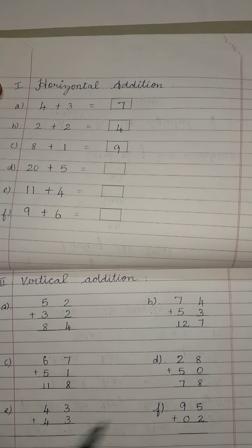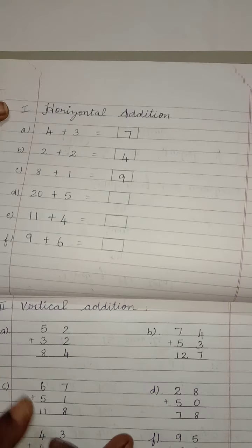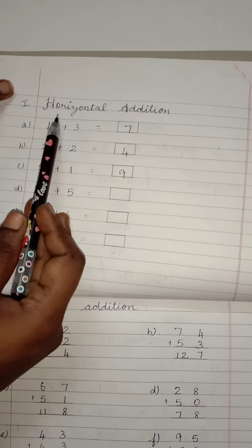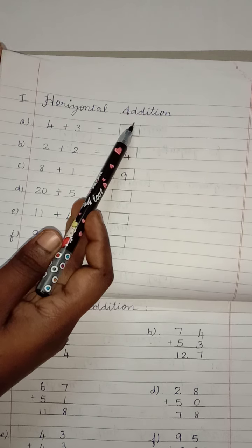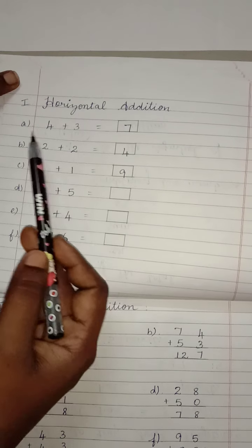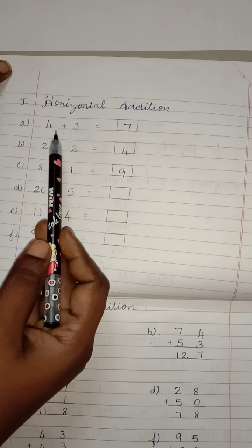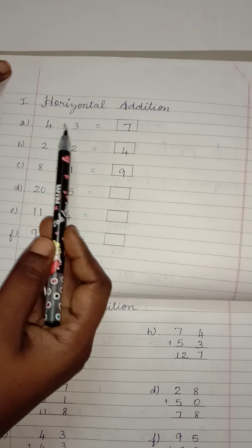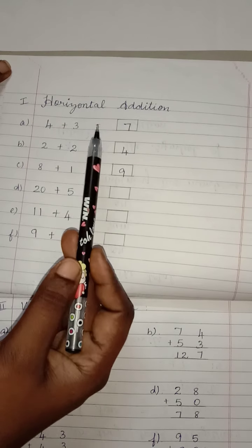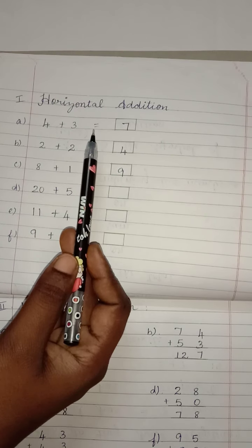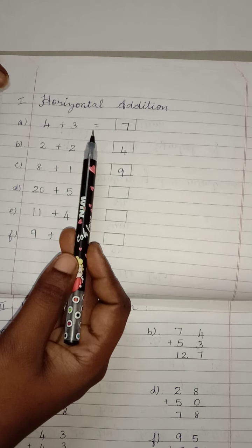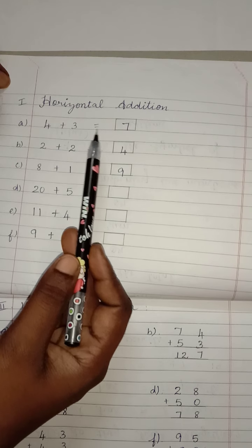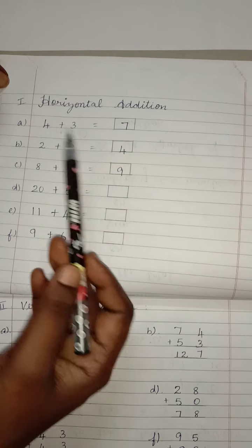Then, check the next page. First, Horizontal Addition. For the first sum: 4 plus 3 — what is the answer? 4 plus 3, what do we get? 7.